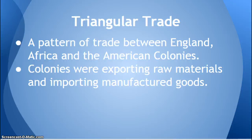Our final concept is triangular trade. Triangular trade is a pattern of trade between England, Africa, and the American colonies and West Indies. The colonies were exporting raw materials and natural resources, and bringing in manufactured goods from around the world through Great Britain. Great Britain acted as the middleman — since colonies couldn't trade directly with other countries, if they wanted something from another country they had to go through Great Britain, who raised the price and made a profit on goods they weren't even producing, simply reselling them.